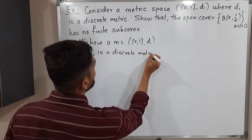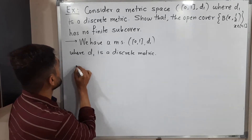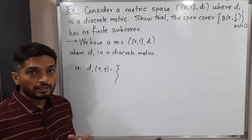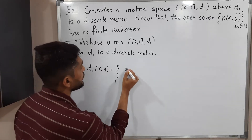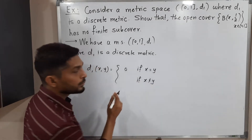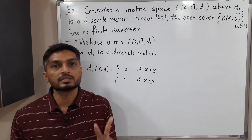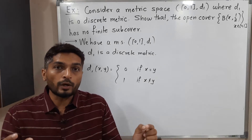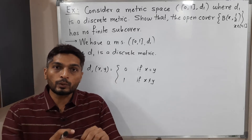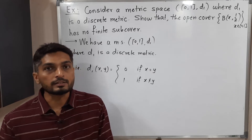I hope you remember the definition of discrete metric. Discrete metric D1(x,y) is defined as: distance is 0 if x is equal to y, and if x is not equal to y — that means if you take two distinct points — the distance is 1. So in a discrete metric, there are only two distances, either 0 or 1.